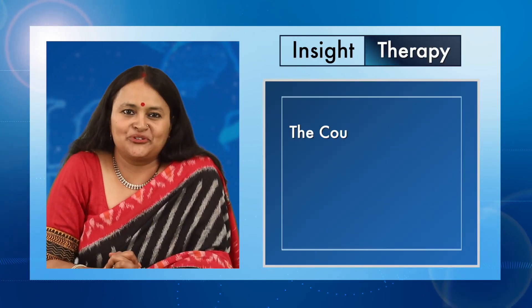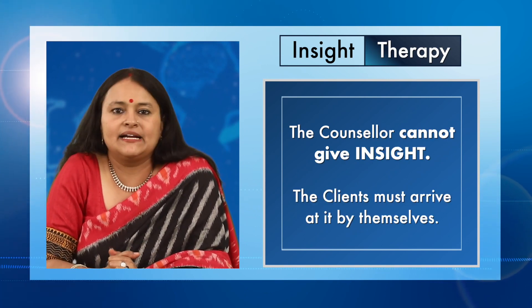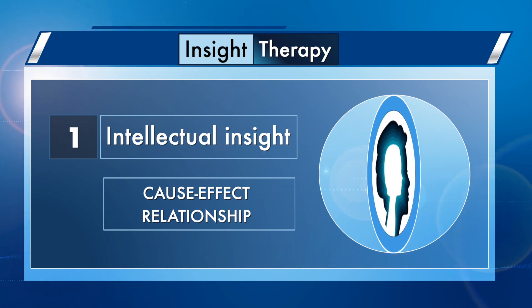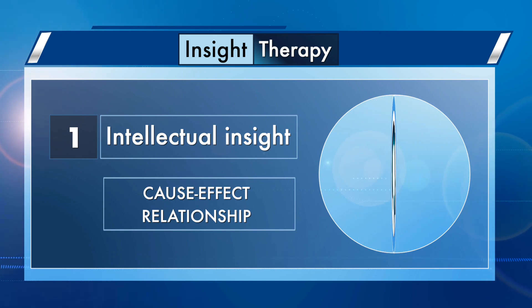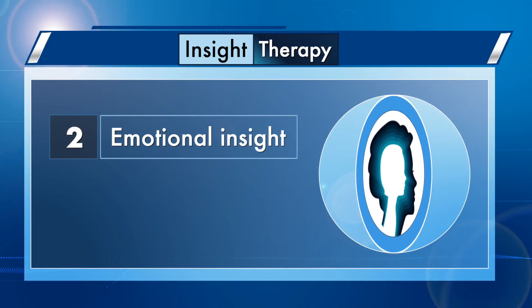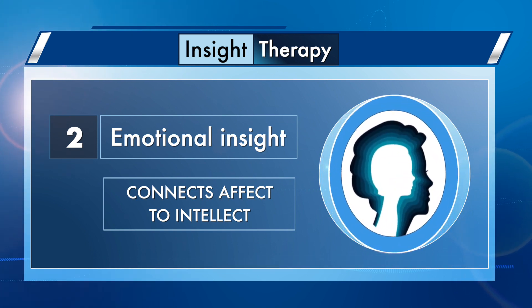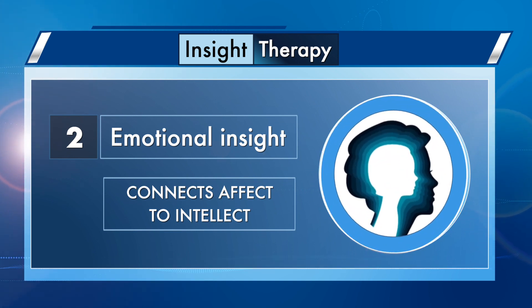In particular, there is increased understanding of recurrent patterns of maladaptive relating to self and others in insight therapy. It is important to note that the counselor cannot give insight — clients must arrive at it by themselves. Therefore, there are two types of insight. One is intellectual insight: the cause-effect relationship of why a particular behavior is occurring. Cognitive insight usually lacks depth because it does not connect cognitive understanding with experiential, feeling-based understanding — it is more like observing oneself from a distance. On the other hand, emotional insight connects affect to intellect. The client is emotionally connected to their understanding. The simultaneous experience of self-understanding with these feelings is insight in its most powerful and curative sense.